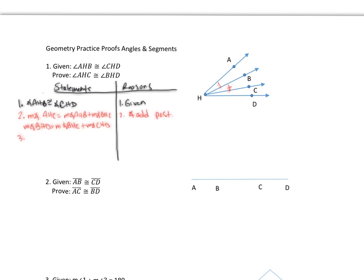Now, what can I do next? Since I know that CHD is equal to AHB, I can substitute that right in there. But before I do that, notice how these are angles and congruence — I need to change these to be measures and equality. So we're going to write for step three: the measure of angle AHB is equal to the measure of angle CHD. This is just a technicality, and it's the definition of congruence that allows me to change that.